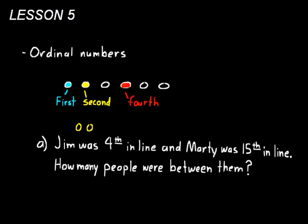You could try to do it in your head — start counting with the fifth person and say fifth, sixth, seventh, eighth, ninth, tenth, eleventh, twelfth, thirteenth, fourteenth. So there would be ten people in between Jim and Marty.